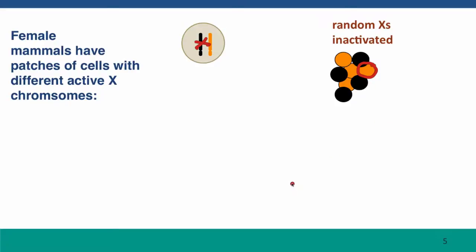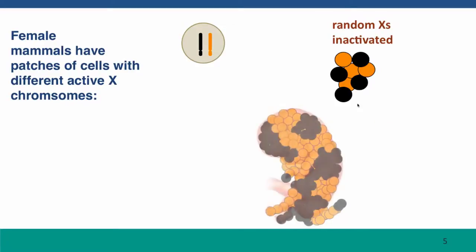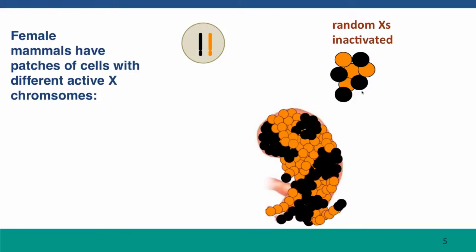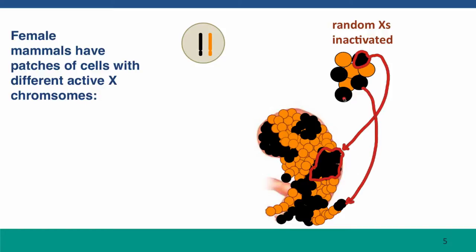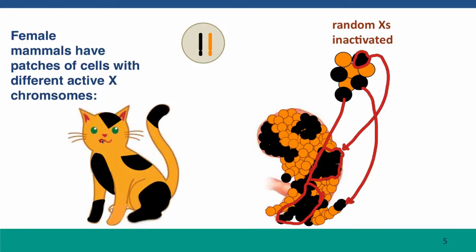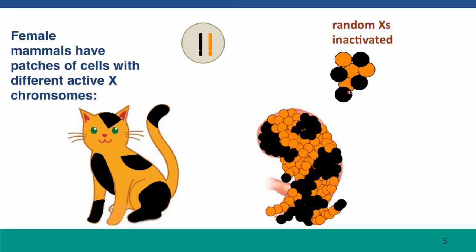Embryonic development continues, and is otherwise pretty much the same in males and females except for this step. Each of these cells in the developing embryo continues dividing and gives rise to a patch of cells — a patch of tissue in the fetus. So we can think of each of these single cells as corresponding to a patch of cells in the developing fetus, and carrying that further to the mature cat. We can connect the single cells that inactivated their X's to a patch of cells in the embryo, to a patch of black fur in the adult cat — maybe that's the cell that gave rise to the black tip of the tail, for instance.